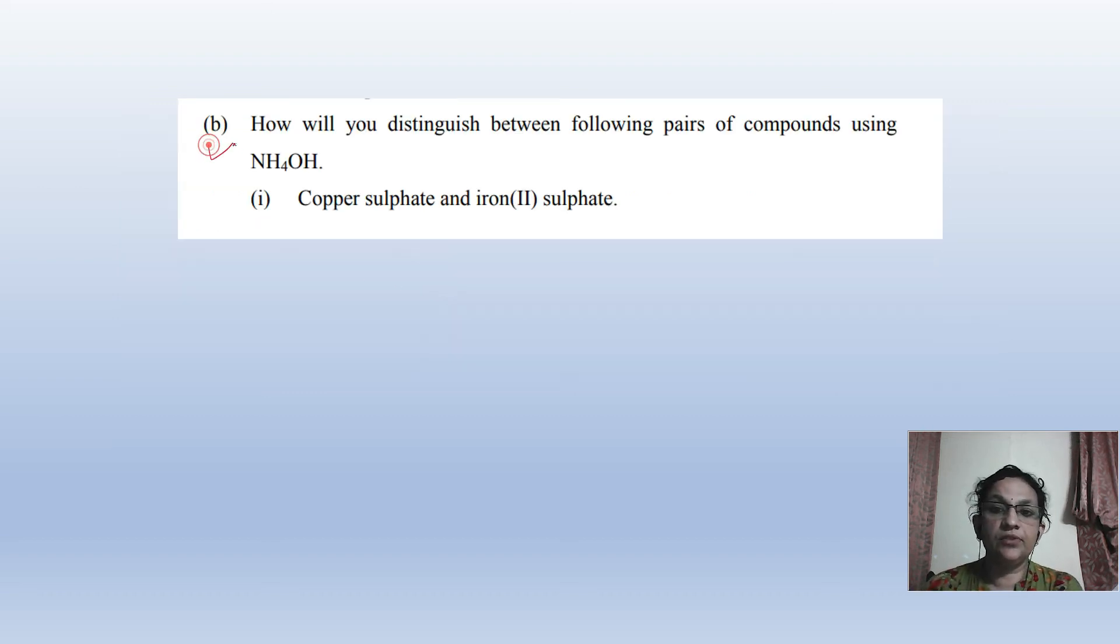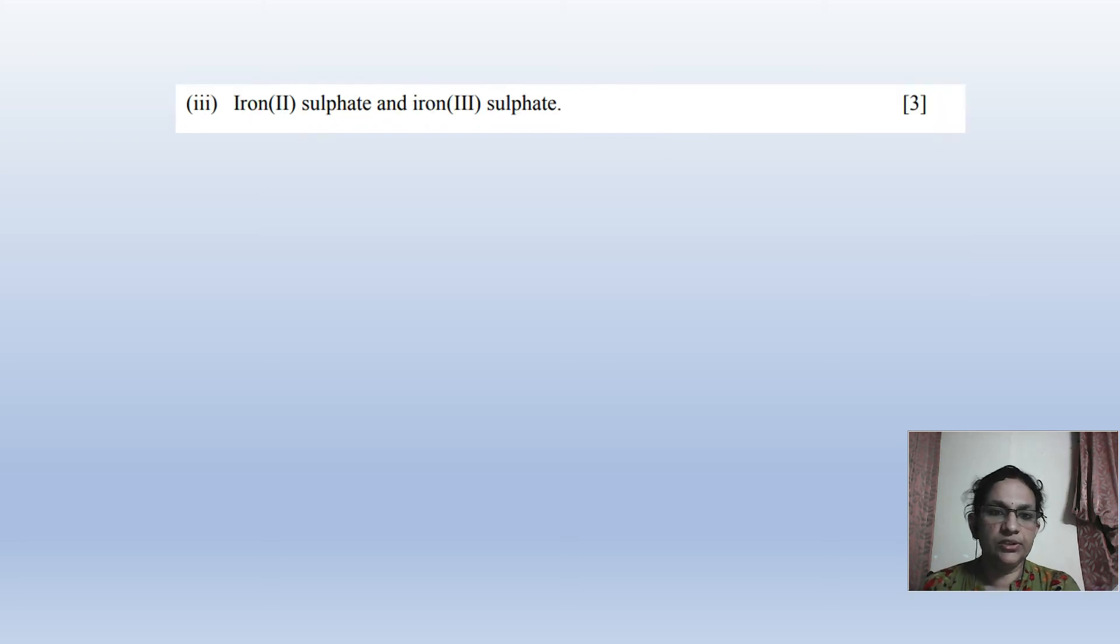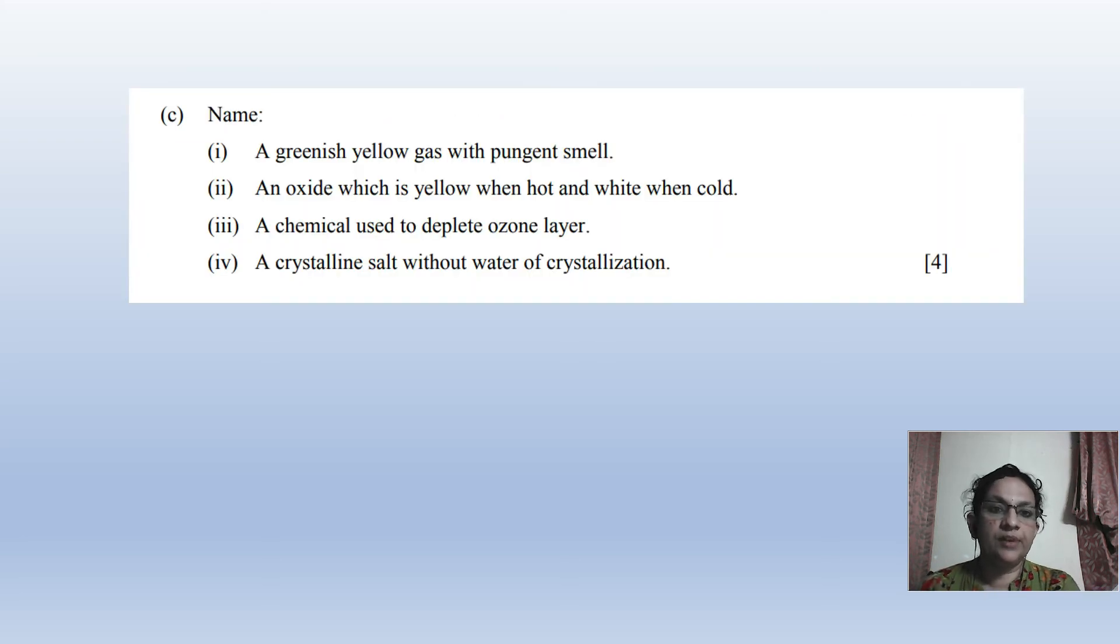After that you have to understand when you react compounds, what will it make. Then again, distinguish between the pair. How will you distinguish between the following pair of compounds using reactions? If this compound reacts, what will be the product? Write the reaction with clarity because you have to balance it. Name a greenish yellow gas with pungent smell. See, when you do this you have to remember it directly - greenish yellow gas should be easy to recall, but indirectly if questions are asked, you might get confused.